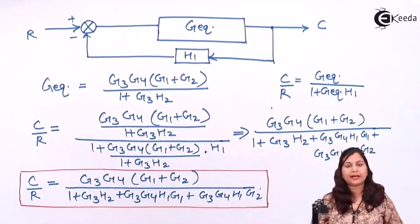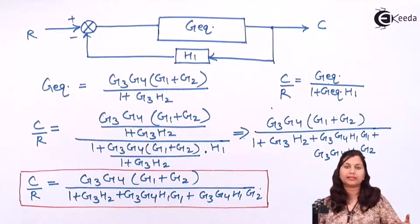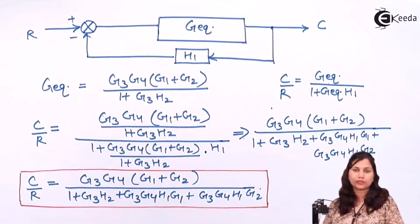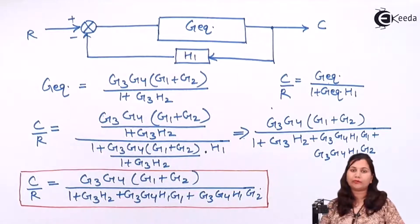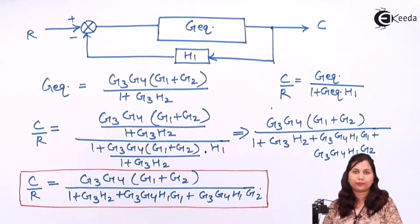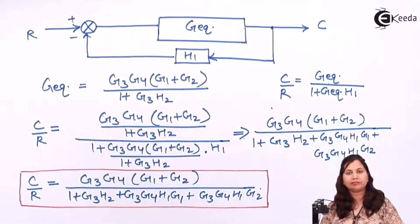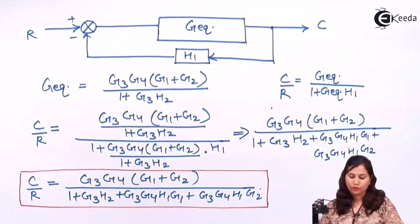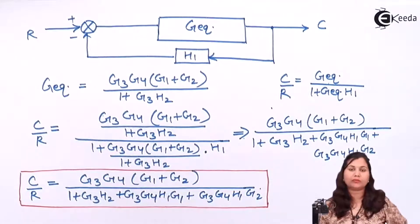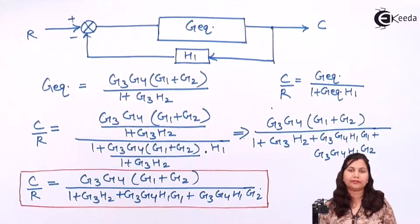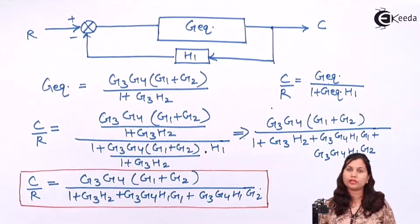For finding C by R, we assumed that input E equals zero. So if we want to find out C by E, then we have to assume that input R equals zero. For both ratios, we first assumed E equals zero, and now we assume R equals zero. Let's see what modification in the block diagram results from assuming R equals zero.